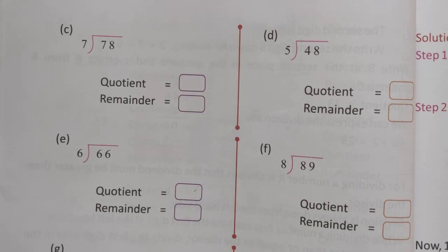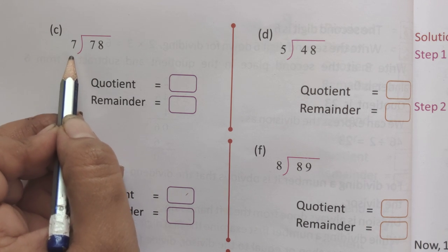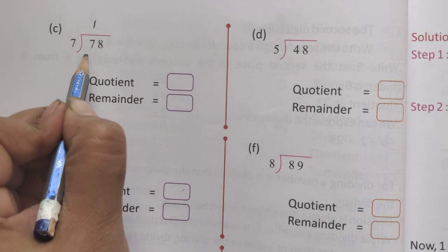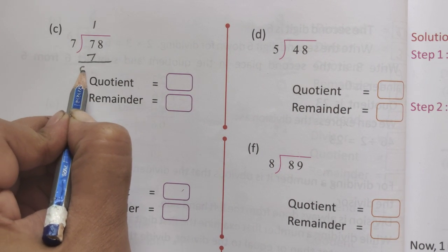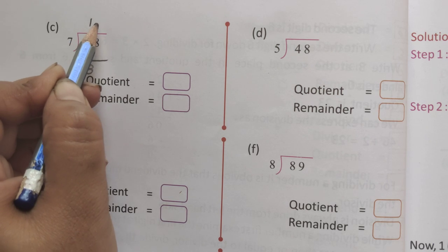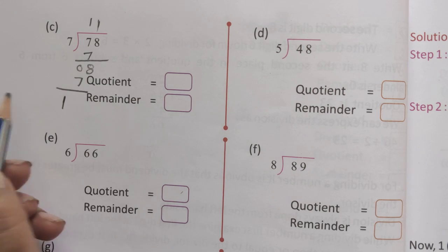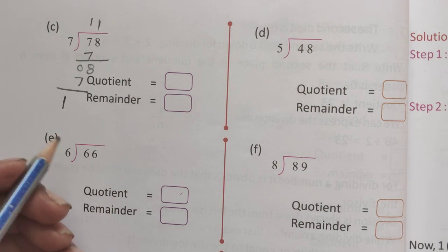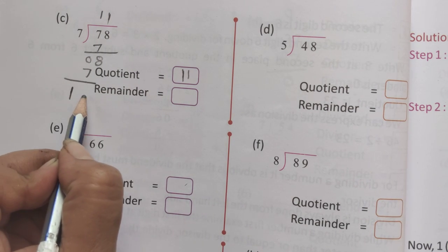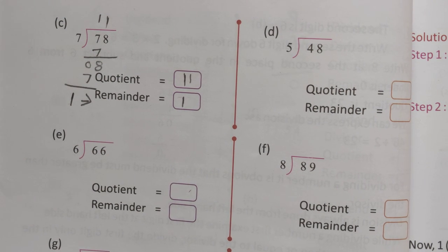Watch carefully all of you. The dividend is 78 and the divisor is 7. Using the table of 7: 7 ones are 7, that's 0. Next number is 8. Again, 7 ones are 7. 8 subtract 7 equals 1, which is the remainder. The quotient is 11 and the remainder is 1. Is that clear? Any problem?